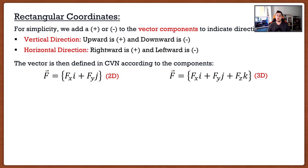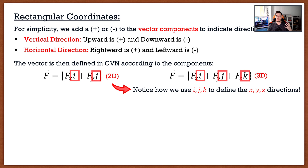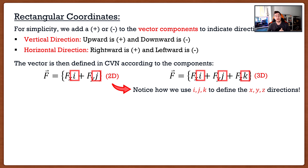We use i, j, k instead of x, y, z because x is typically used as a variable, which gets confusing. So i always means the horizontal or x-direction, j refers to the vertical direction, and k will be that third 3D direction. If you ever see an i it's going horizontally, a j is vertical, and k is the third 3D direction.